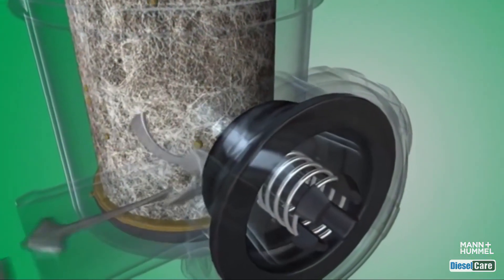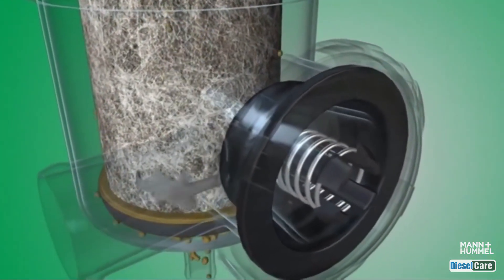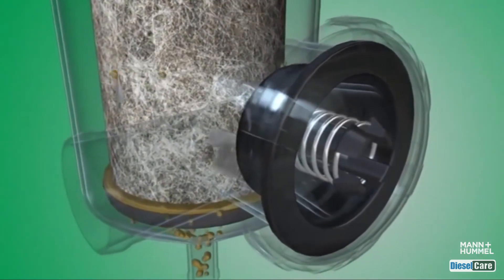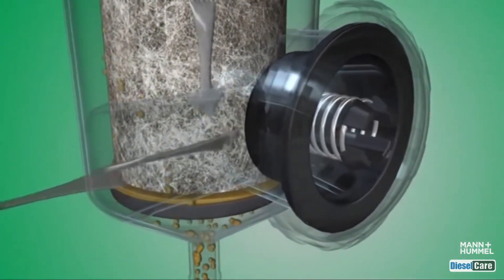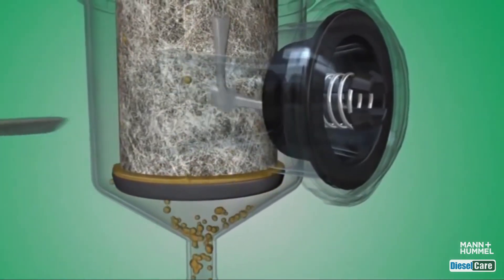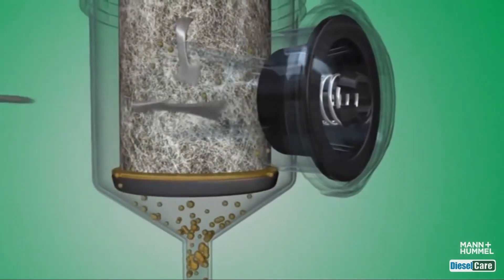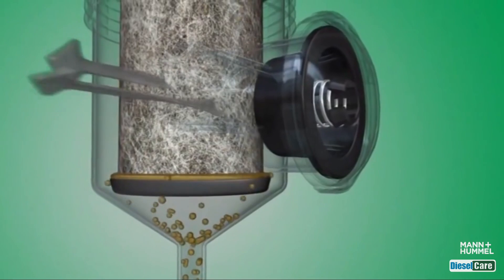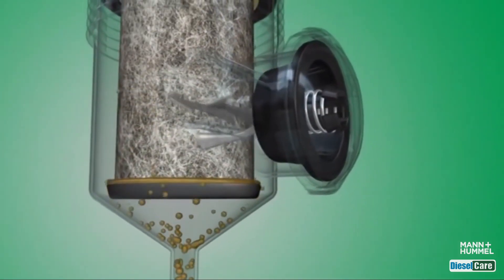With closed crankcase ventilation, there is a hydraulic connection between the engine air intake and the crankcase. Therefore, the constantly changing pressure difference between the air intake and crankcase must be compensated for by pressure regulation to ensure the pressure level is suitable for the crankcase.